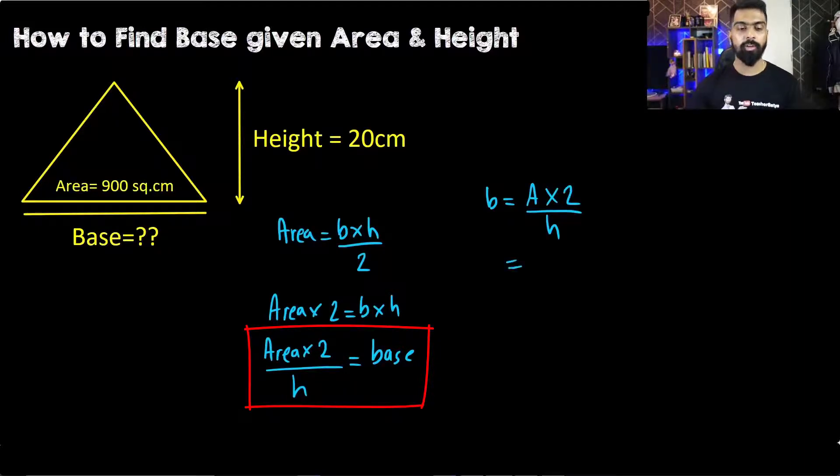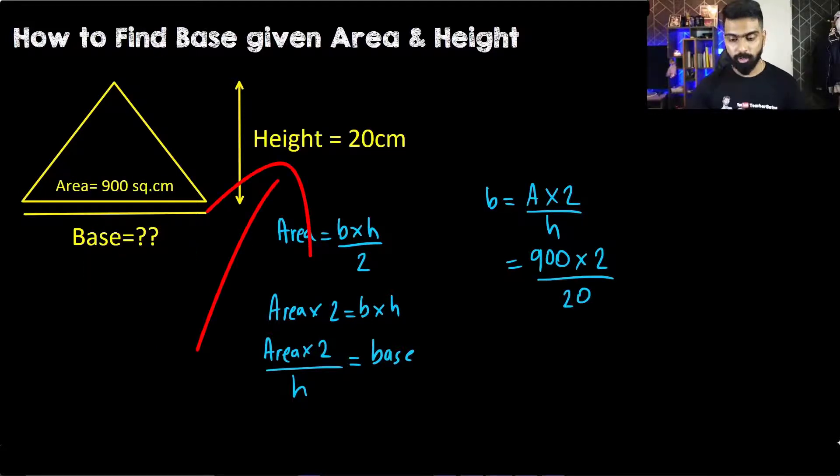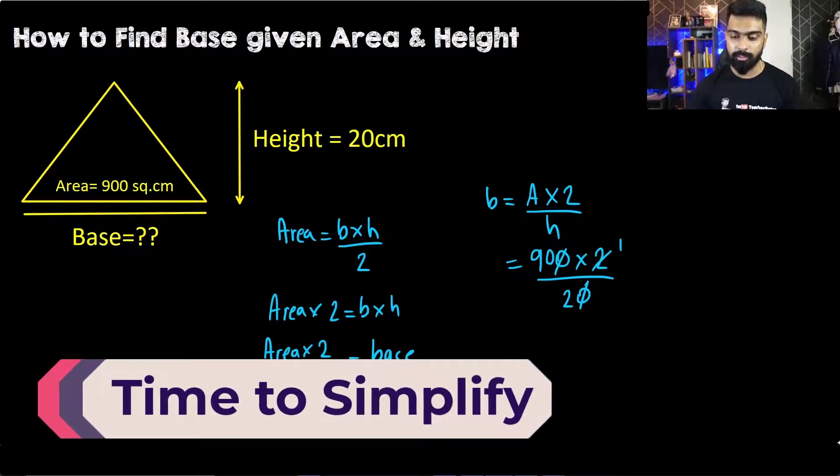In this case, the area is 900 square centimeter multiplied by 2 divided by its height, which is 20. Let's simplify: zero and zero cancel, and 2 becomes 1. Therefore, the base equals 90 centimeter.